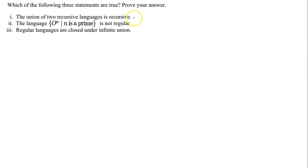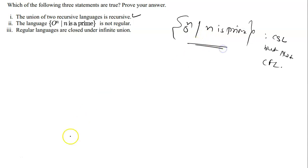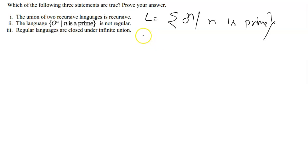Now the second statement: the language {0^n | n is prime} is not regular. This is true — this is a standard non-regular language. It is actually non-CFL as well; it is a context-sensitive language but not context-free. We can prove it is not regular using the pumping lemma. Let L = {0^n | n is prime}. Assume L is regular.